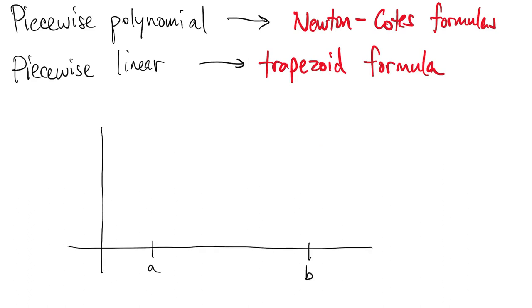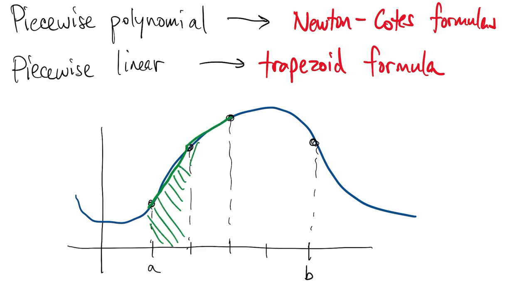There's a simple geometric intuition behind the name. Here's a function over the interval, which we divide up into n equal pieces. We evaluate the function at these nodes, and then draw the piecewise linear interpolant. The area underneath the interpolant is the sum of the areas of these trapezoids.